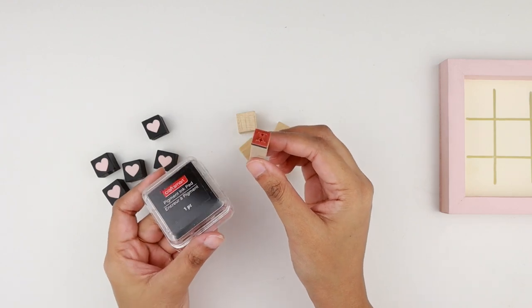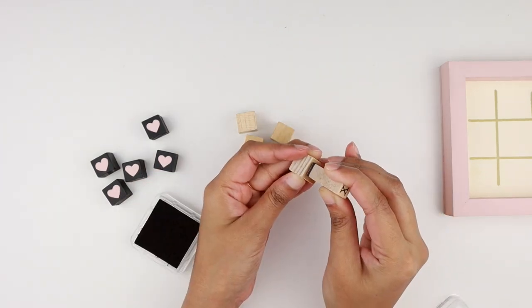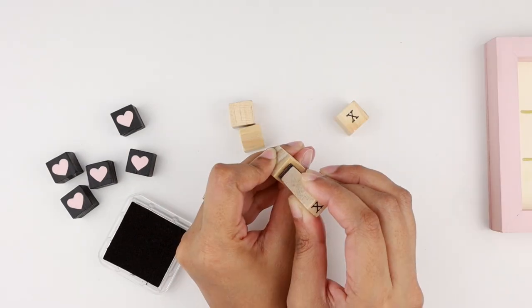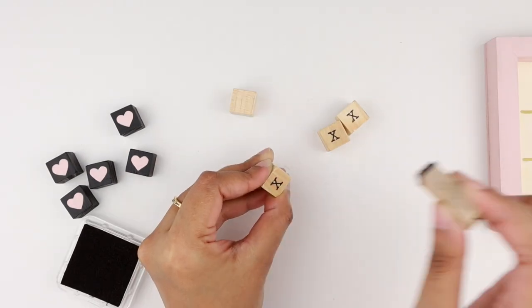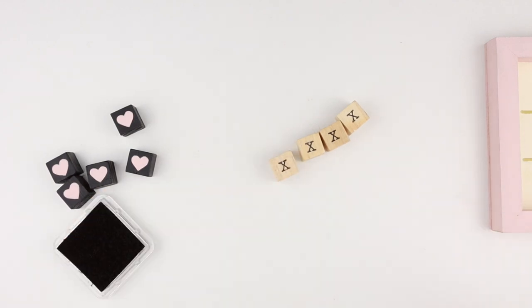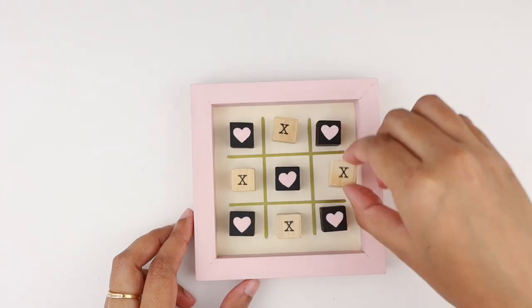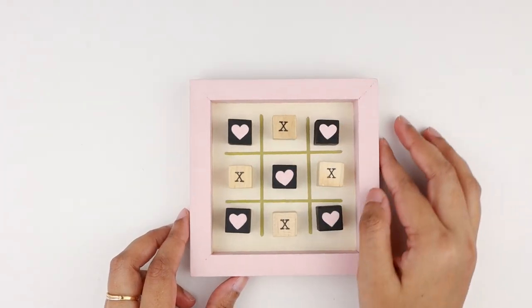Then I grabbed this X alphabet stamp and a black ink pad and stamped it on one of the sides of the plain wooden cube. I repeated the same for the remaining pieces. I arranged the pieces and we have our DIY tic-tac-toe board game ready. This will be an adorable gift for Valentine's Day.